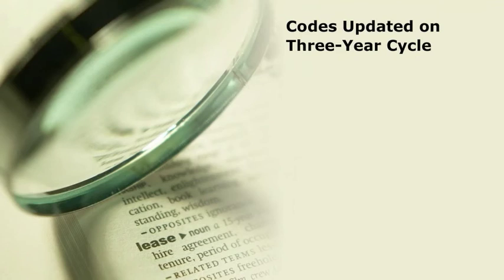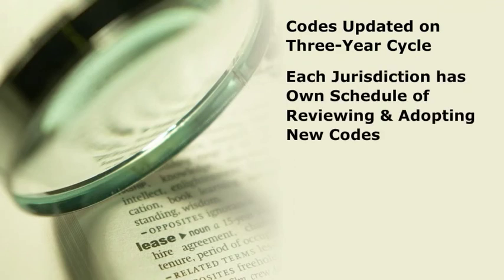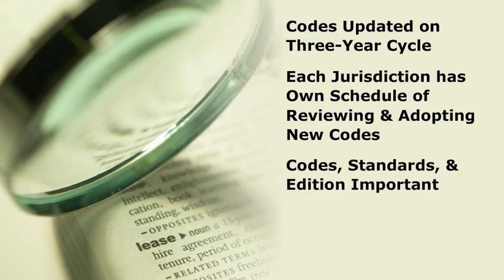Most codes are updated on a three-year cycle, but each jurisdiction has its own schedule of reviewing and adopting the new codes. Not only is it extremely important to know which codes and standards apply to a project, it is also important to know the edition.